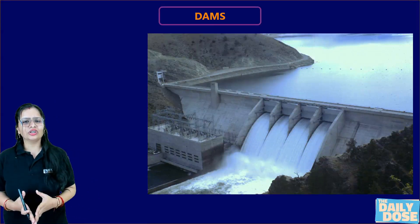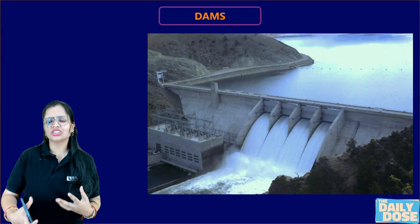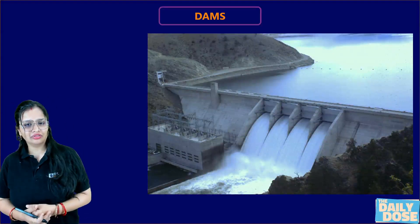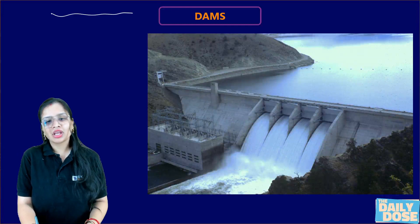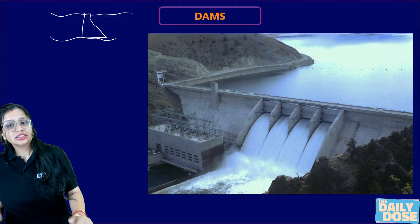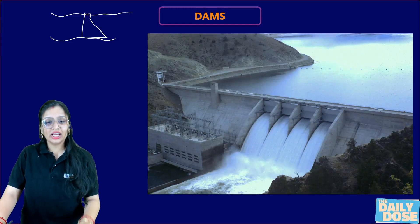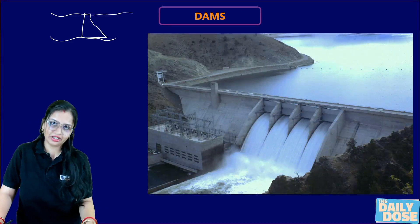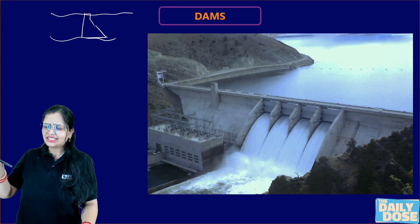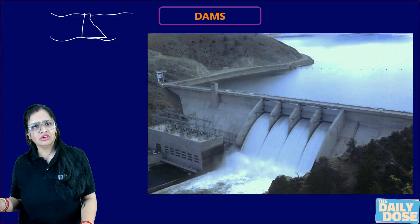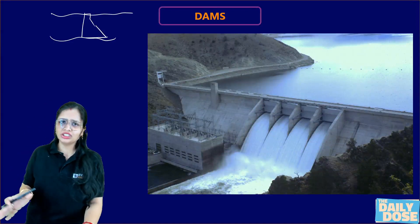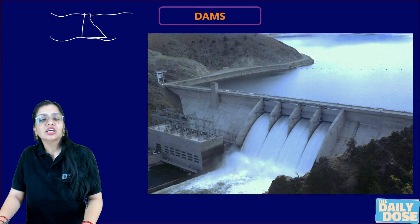You already know about dams. A dam is a barrier, or an obstruction, which is constructed across the width of the river. If this is a river which is flowing, the dam is constructed across its width. We store water on the upstream side of the dam and we call that a reservoir. So the question is: is a dam a storage headwork or a diversion headwork?